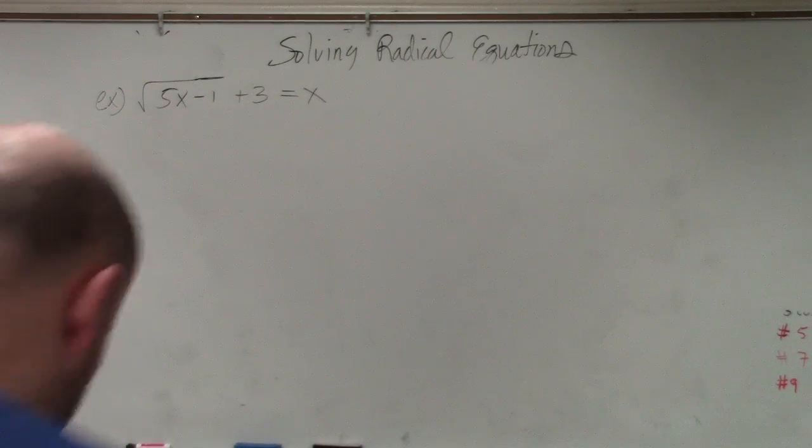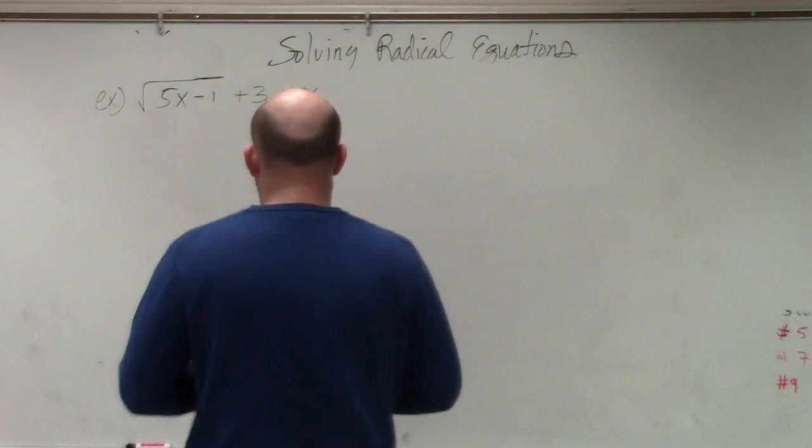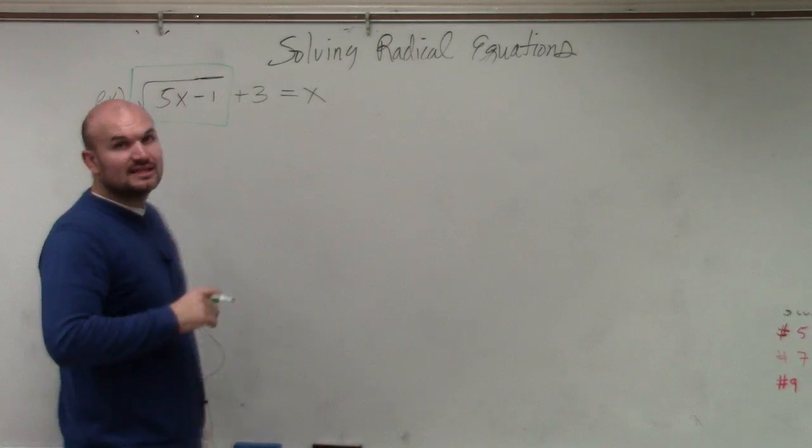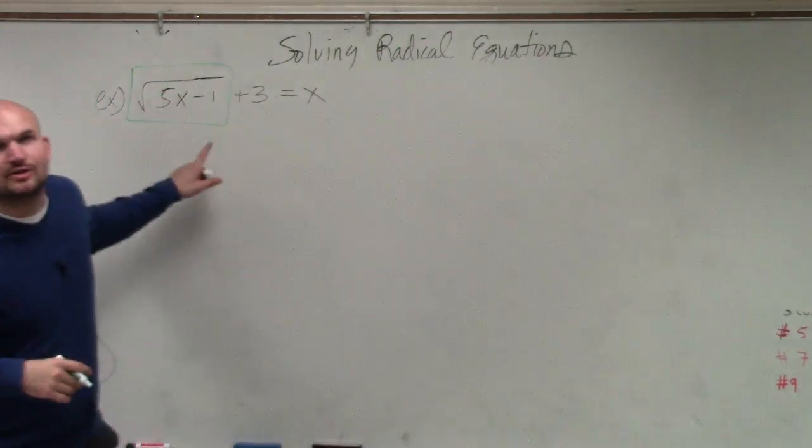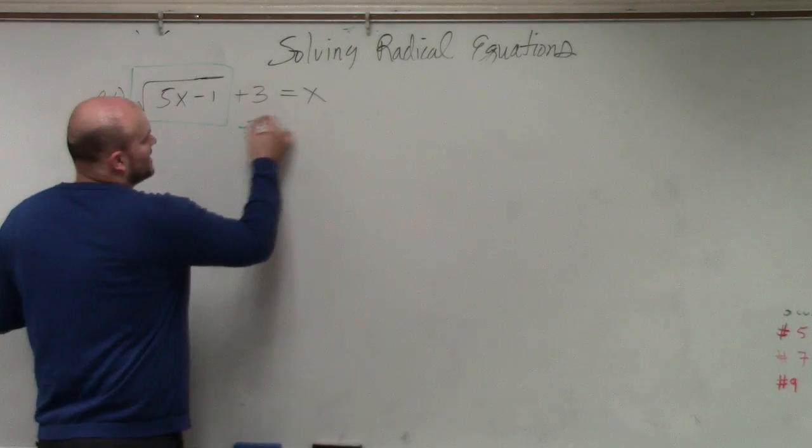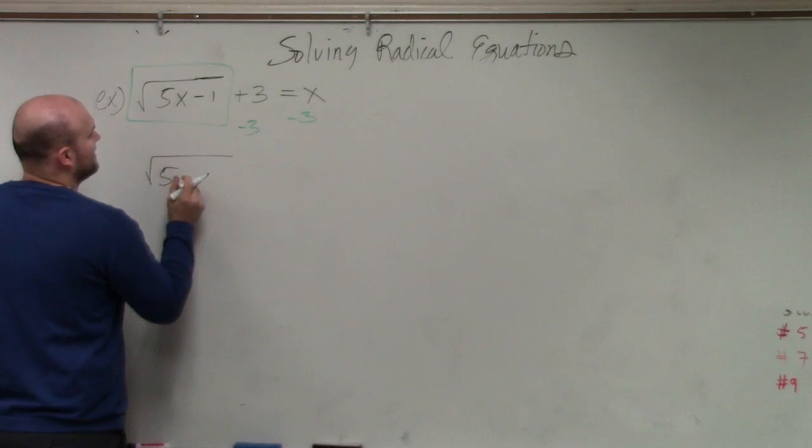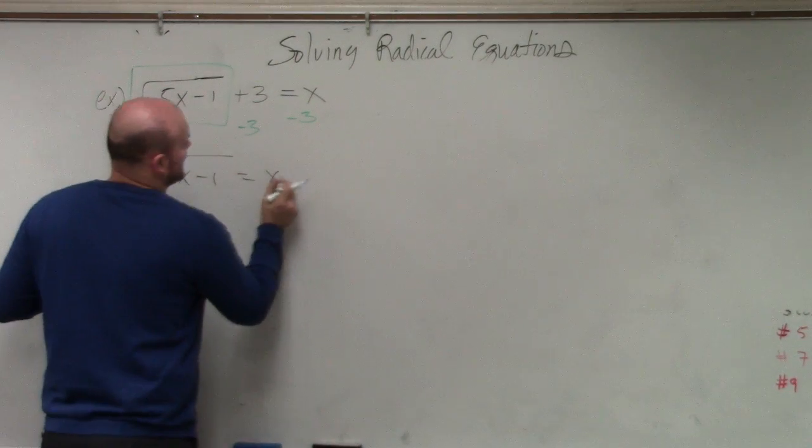I just want to go over this problem and show some of the examples for those of you that got stuck. The main important thing I would recommend is isolating your radical expression. So I'm going to subtract the 3 on both sides. Therefore, I have 5x minus 1 equals x minus 3.